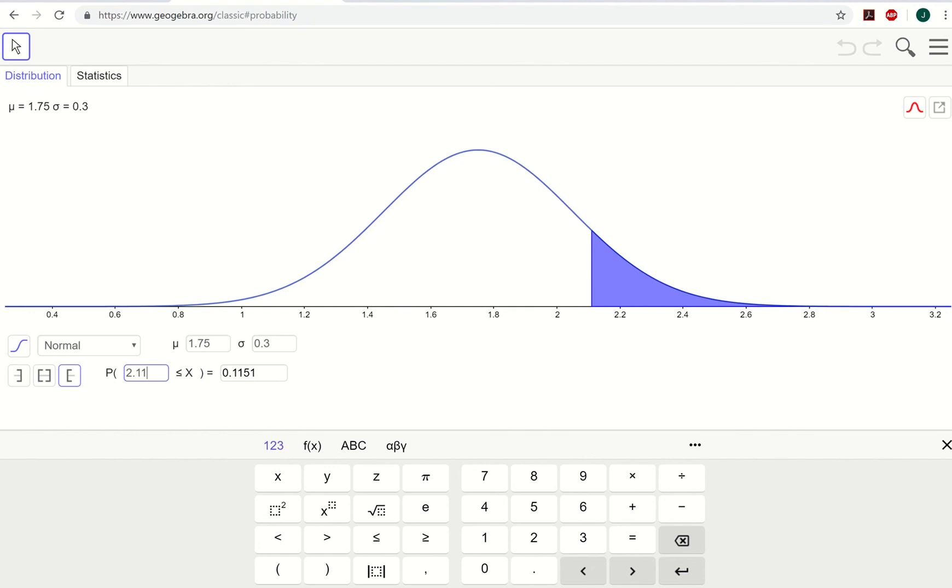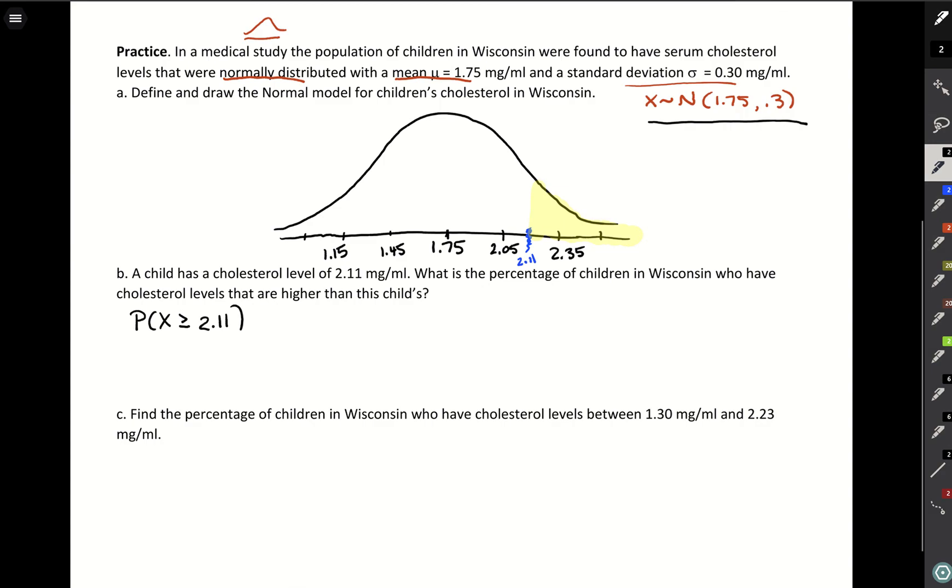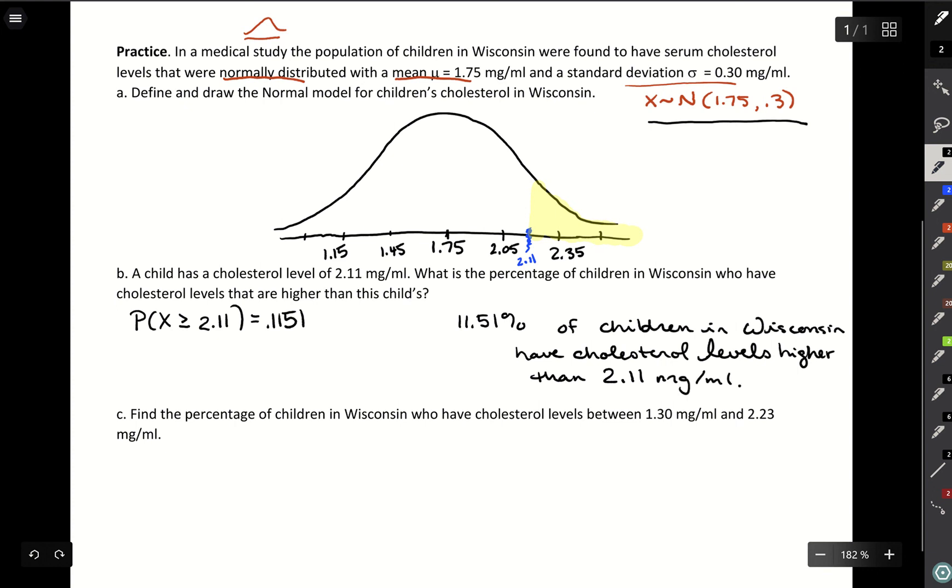What we like to do with these is always draw a picture by hand first, because that can get your interpretation of the wording of the problem. Then just with GeoGebra giving you the visual, double-check that they match up. This looks very close to what we drew on our paper. That's telling us we have this 0.1151 probability. This would mean 11.51% of children in Wisconsin have cholesterol levels higher than 2.11 milligrams per milliliter.